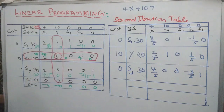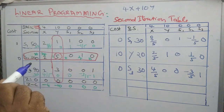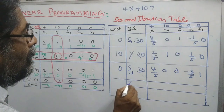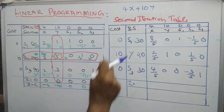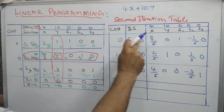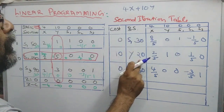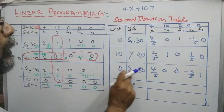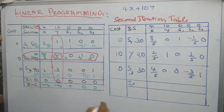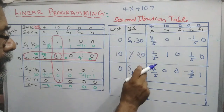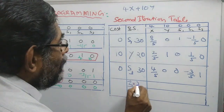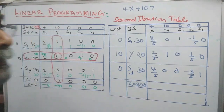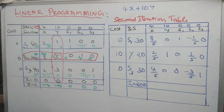Ignore the mixed display. The next step is Z. Z is calculated by our objective function: 0 times 30, plus 10 times 20, plus 0 times 30 — that is 0 plus 200 plus 0, equal to 200. That is 200.